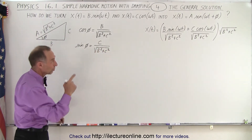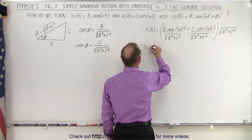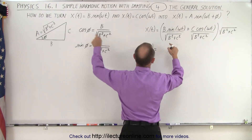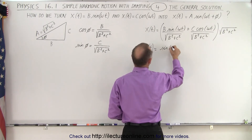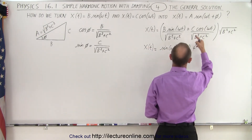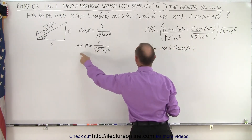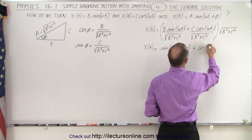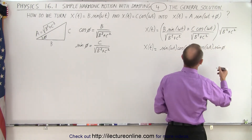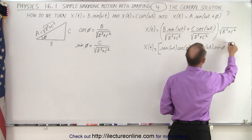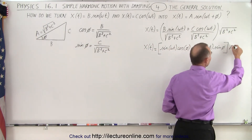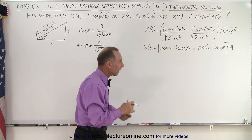Now we can make that substitution into our equation. We can say that x of t is equal to: b divided by the square root of b squared plus c squared is equal to the cosine of phi, so we write this as the sine of omega t times the cosine of phi. Then c divided by the square root of b squared plus c squared is the sine of phi, so we write this as the cosine of omega t times the sine of phi. We multiply the whole thing by the square root of b squared plus c squared, but we're going to call that A, where A becomes the amplitude of the combined solution.